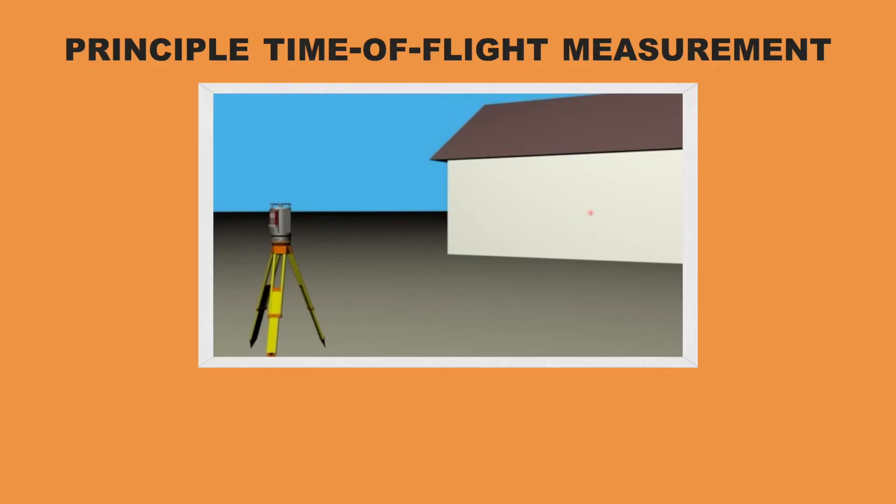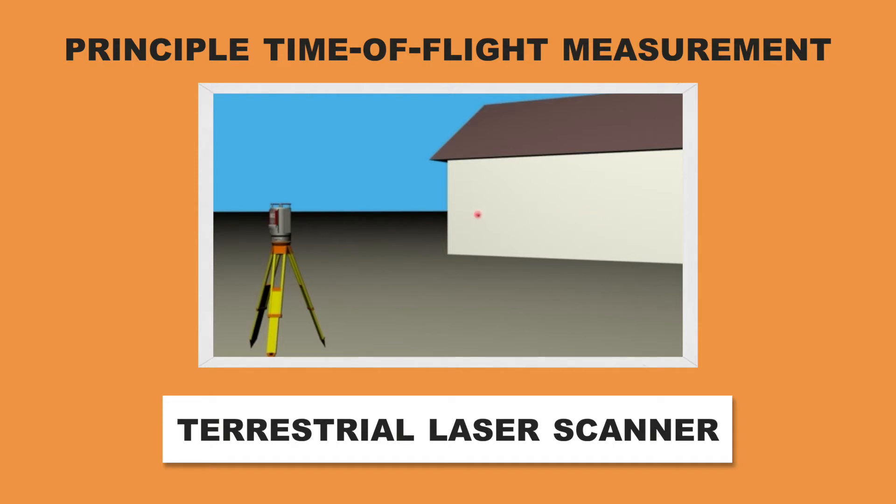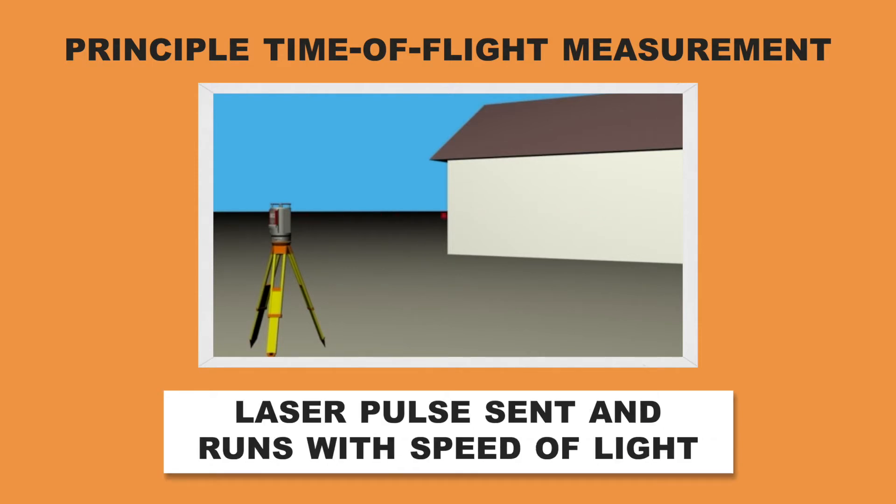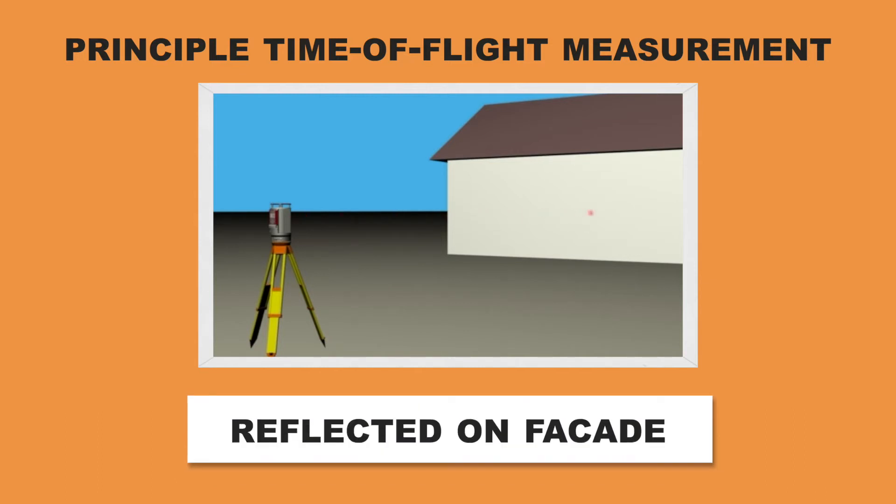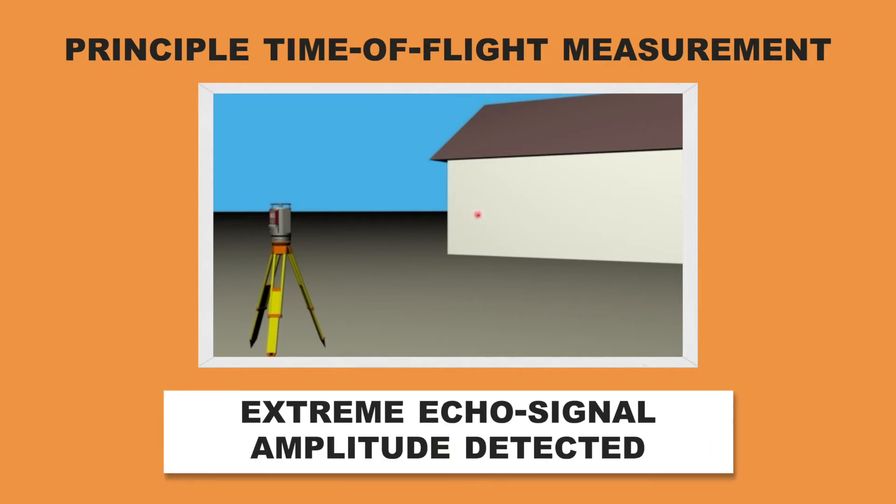This animation shows a terrestrial laser scanner. The laser pulse is sent and runs with the speed of light, is reflected on the facade, and finally we detect the very small echo amplitude.